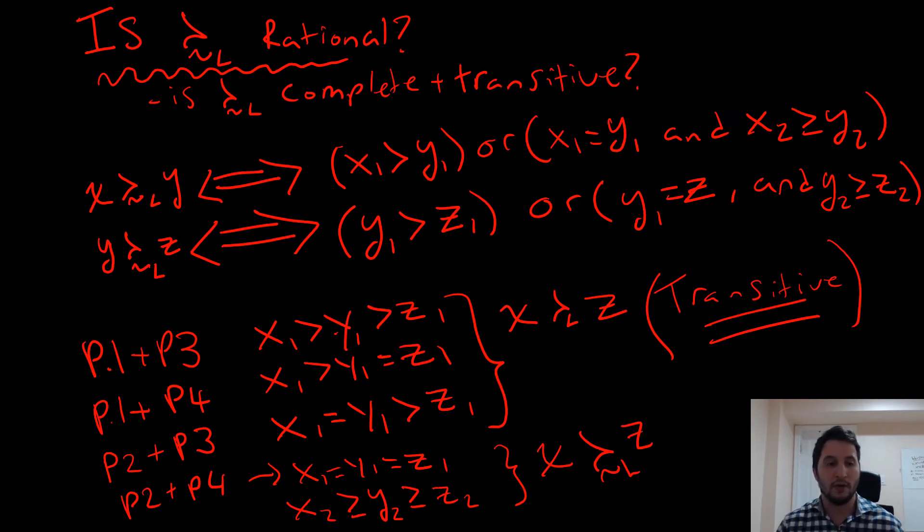First starting out, we're going to ask is our lexicographic preference relation rational? And this is just asking if it's complete and transitive. To go and be talking about transitivity, we have to have three goods here. We're just going to write down these lexic orders for each one of these here. And we have these definitions which are congruent with how we've defined our lexicographic preference relations, but we're going to call these each different properties. We're going to have property one, property two, property three, and property four.